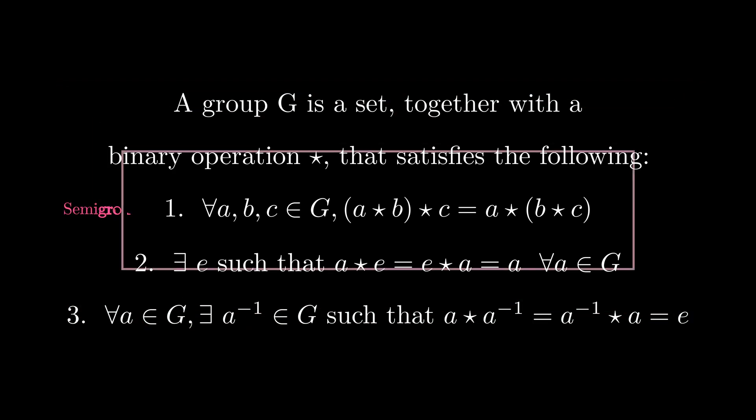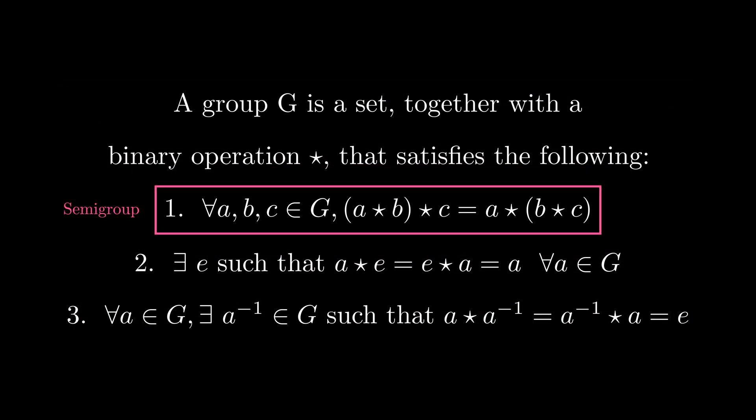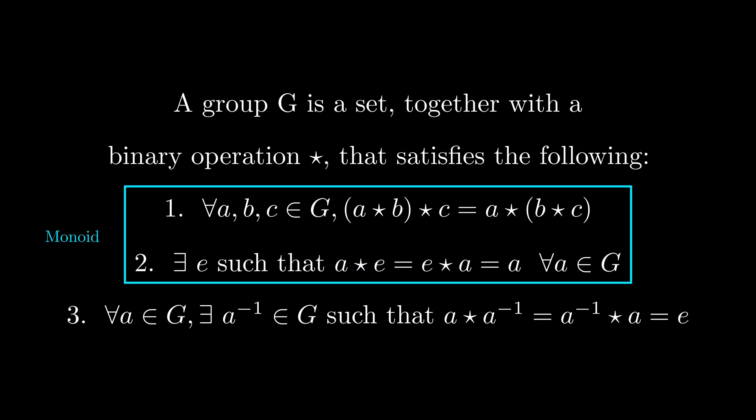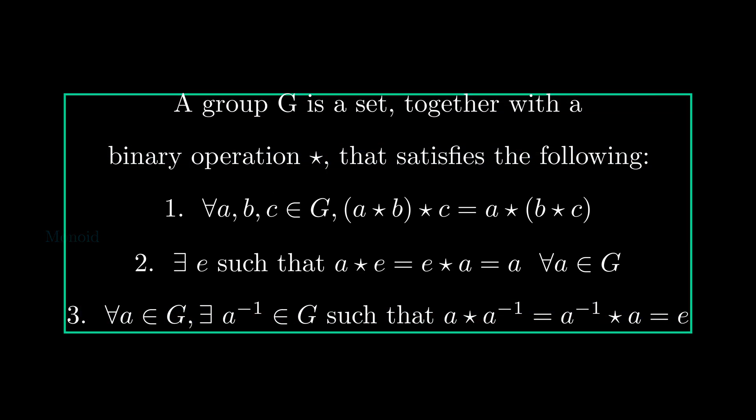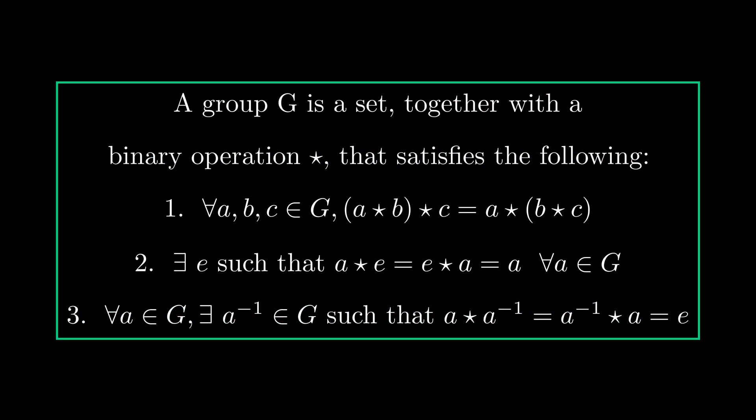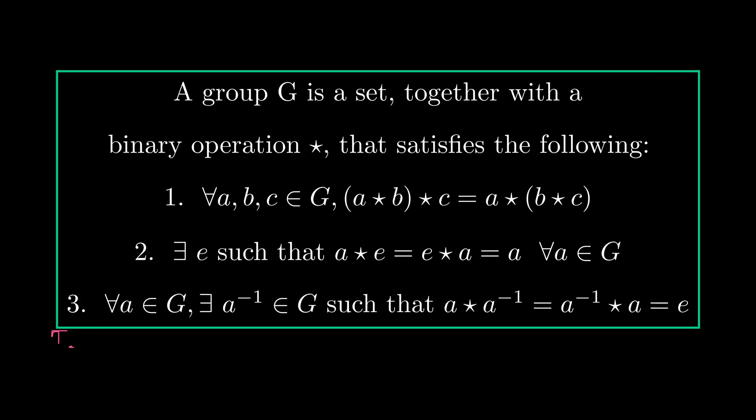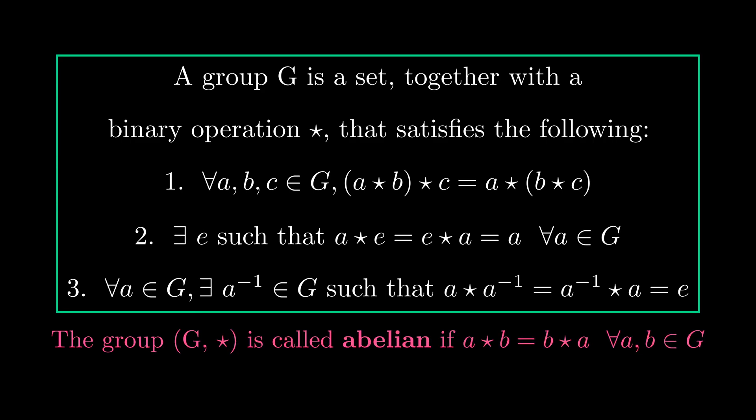If only condition one is satisfied, we have something called a semigroup. And if condition one and two are both satisfied, then we have something called a monoid. Each of these structures are interesting in their own right, but the structure that fully captures the notion of symmetries is that of a group. And if, in addition to these three, the group also satisfies one more condition, we say that the group is abelian or commutative.